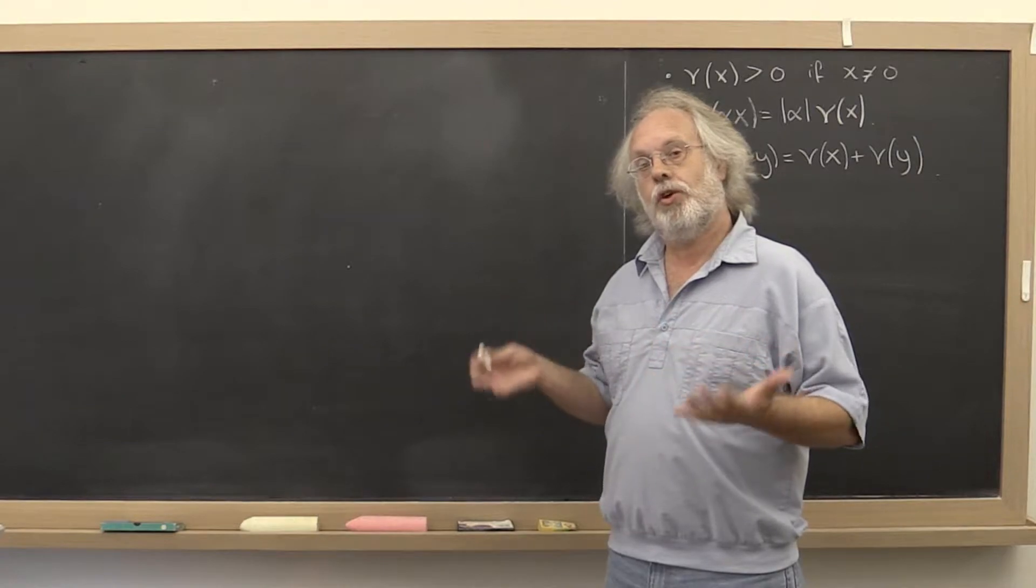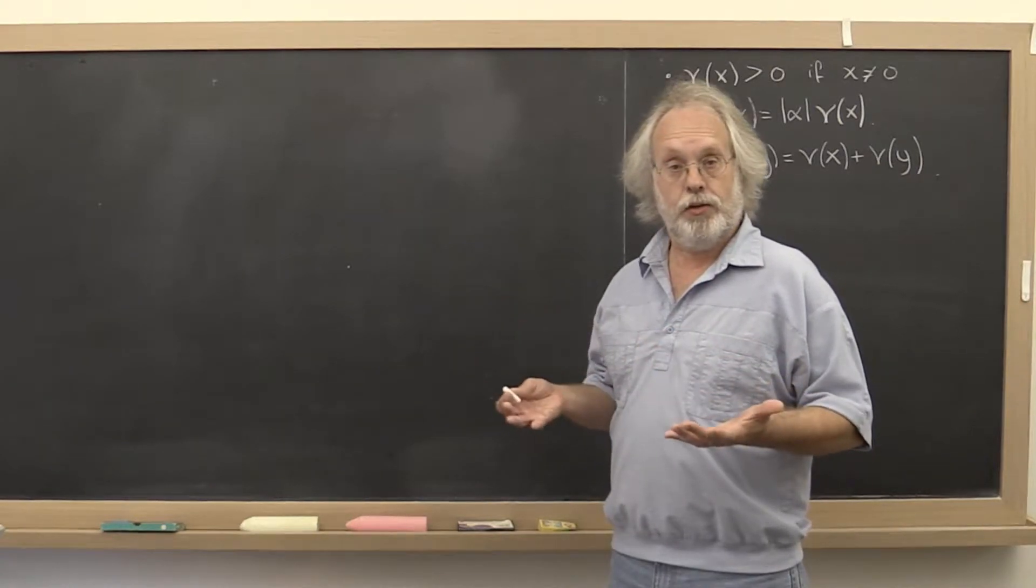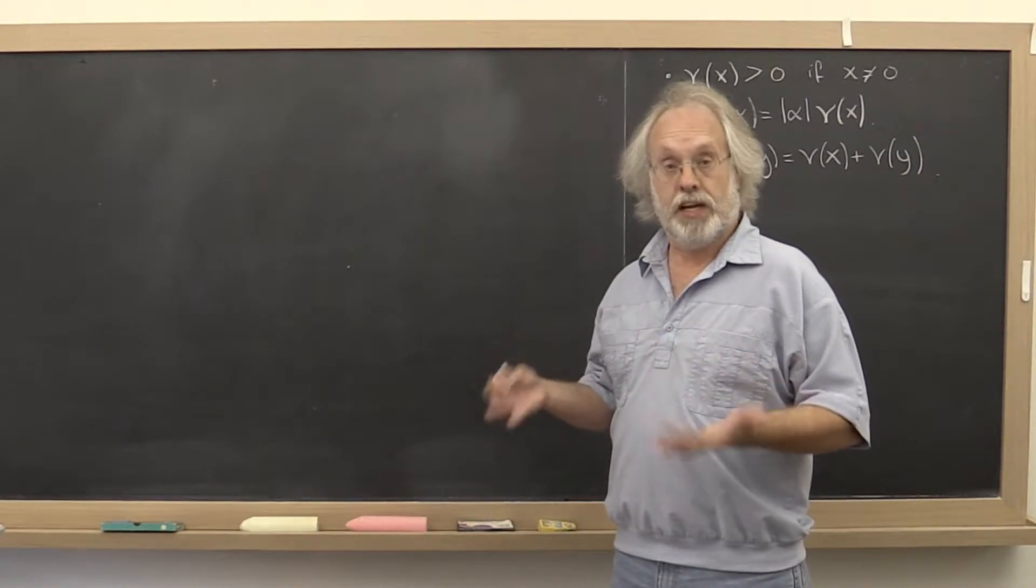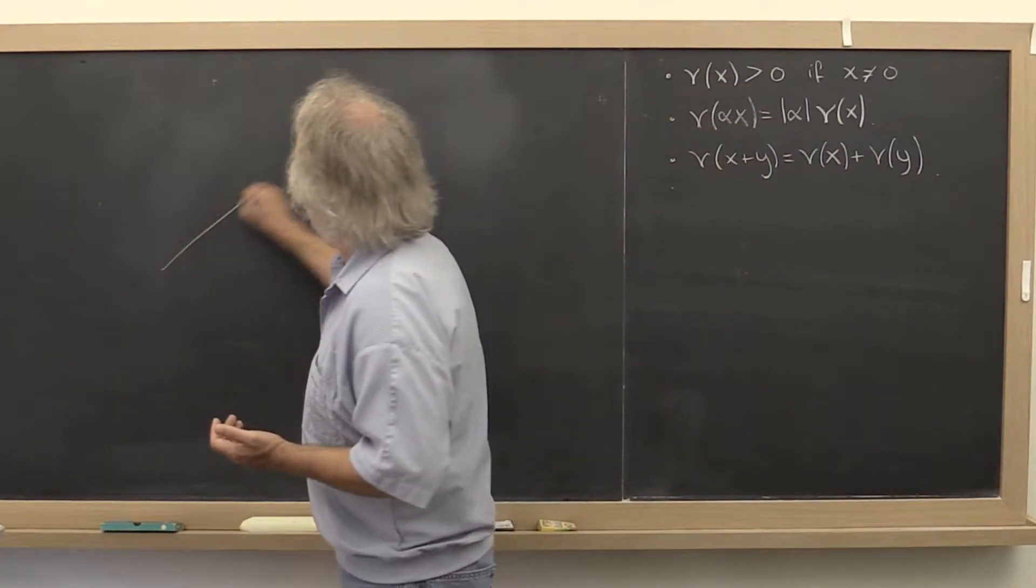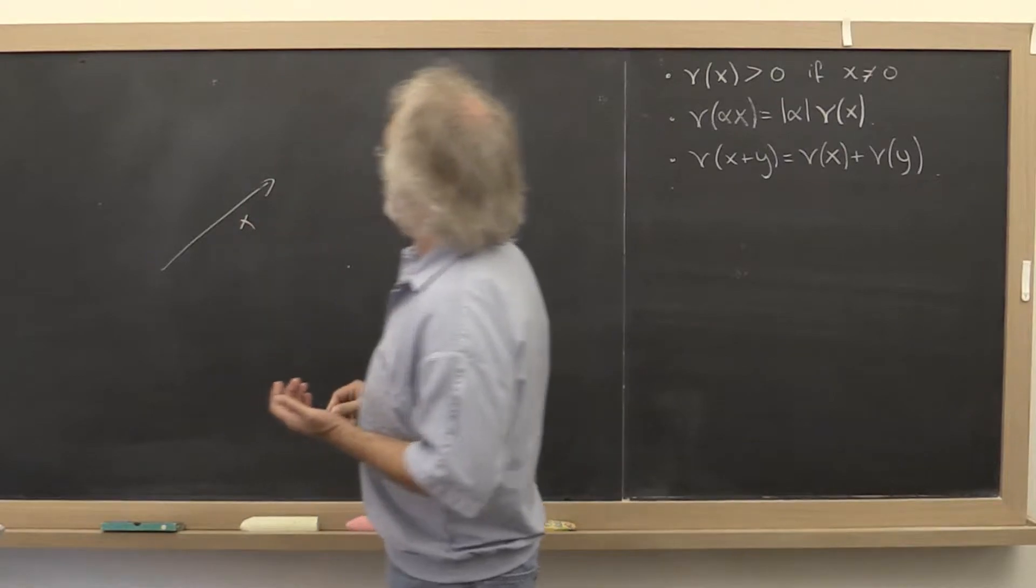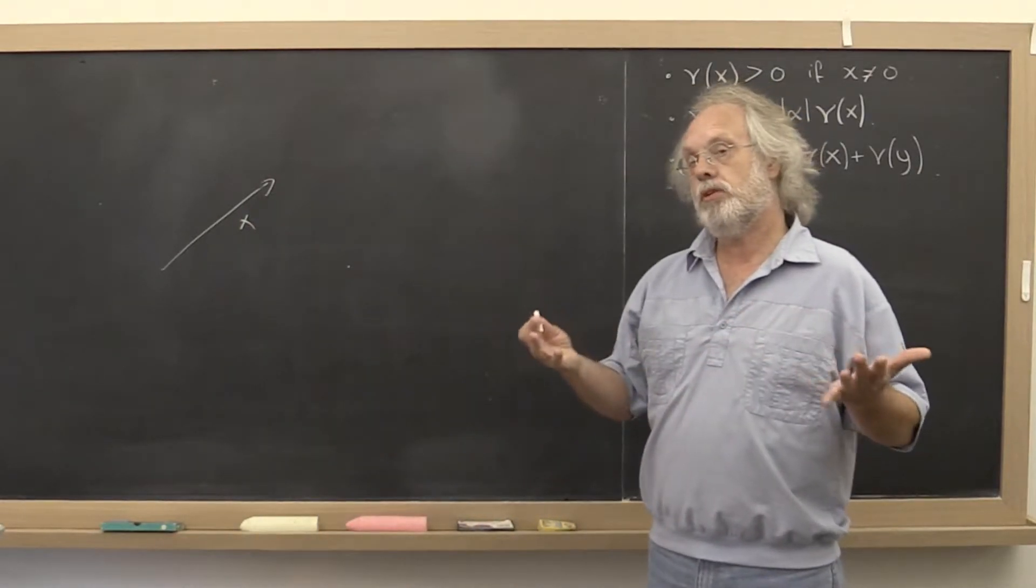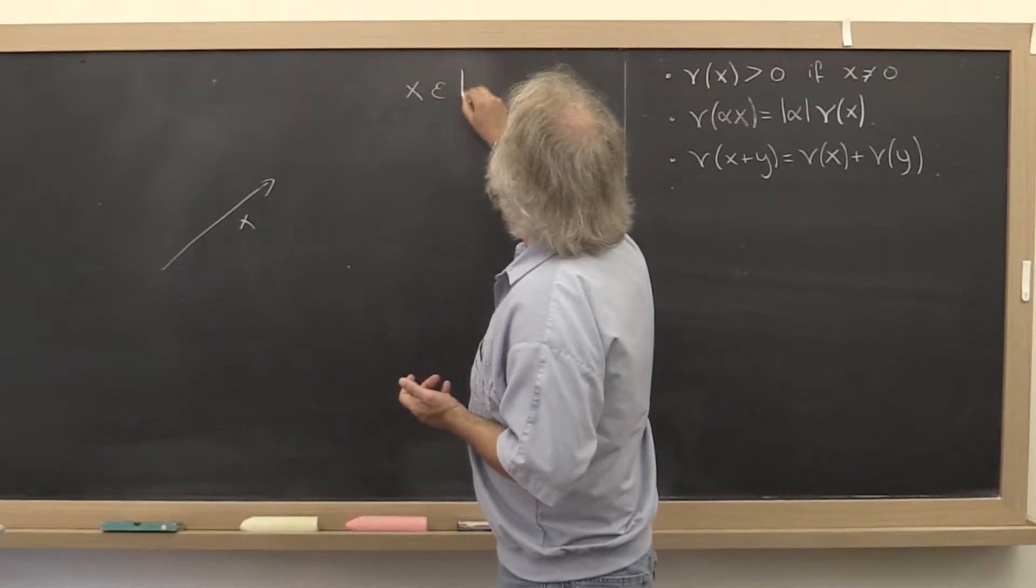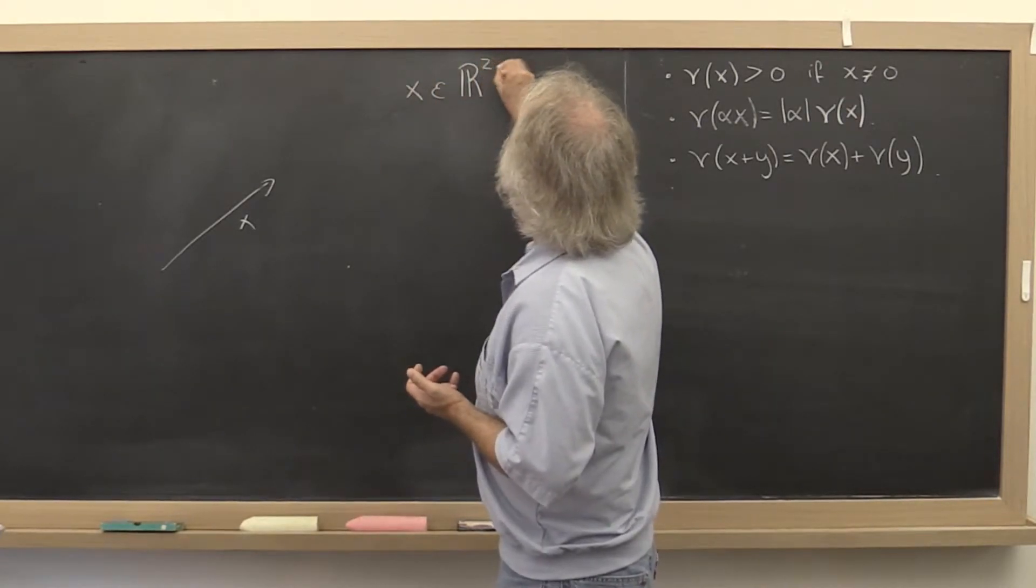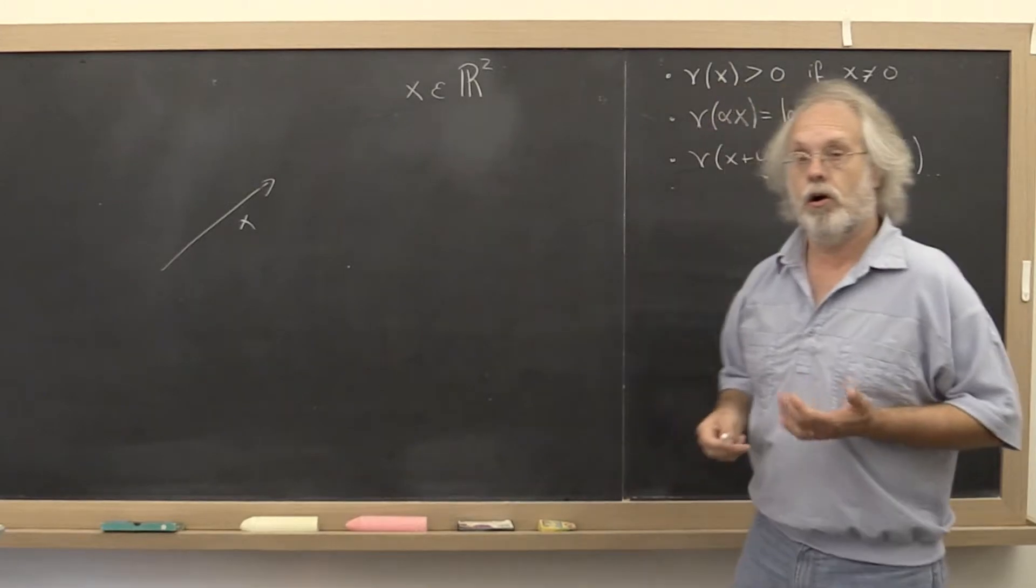So let's extend the notion of absolute value or a norm to vectors. Here's a vector. And for the moment, let's say that that vector is real-valued and only has two components. So it's a vector in R².